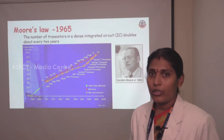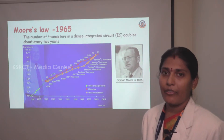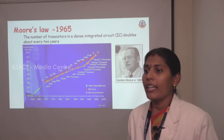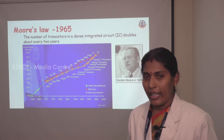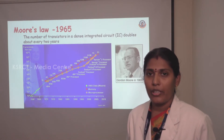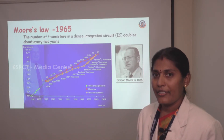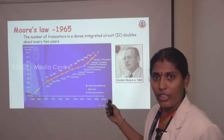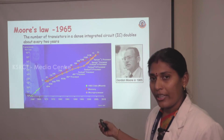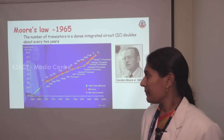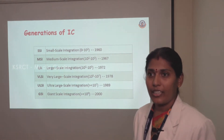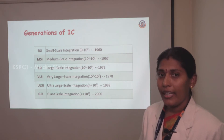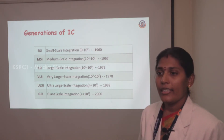What is Moore's Law? Moore predicted in 1965 that every two years the transistor count will be doubled. This graph shows Moore's Law. Based on his law, the generations of IC are: SSI, MSI, LSI, VLSI, and ULSI, GSI.